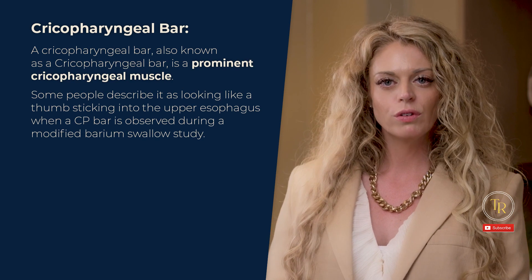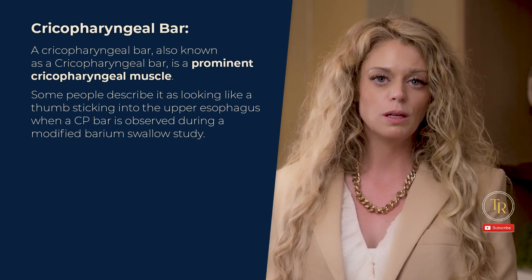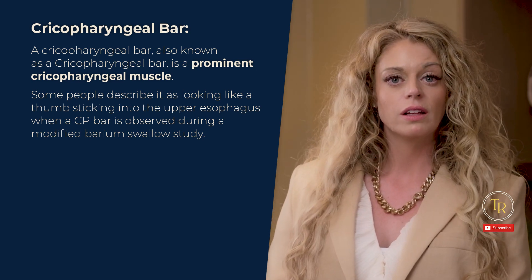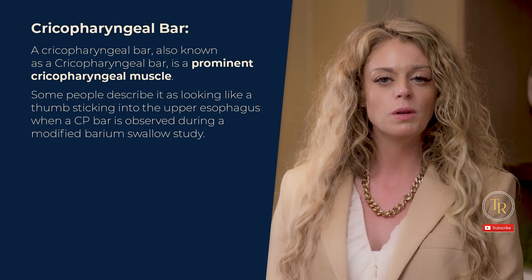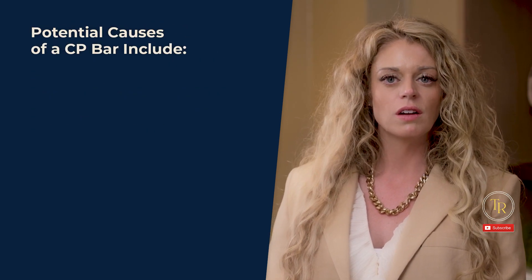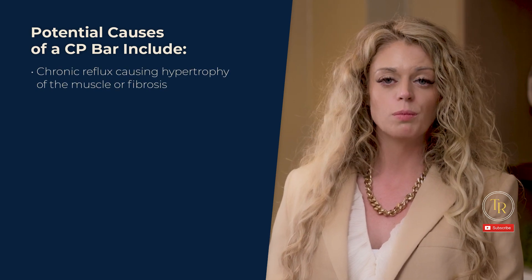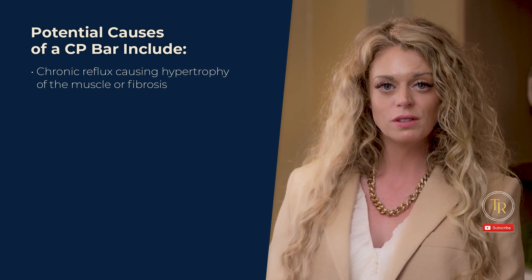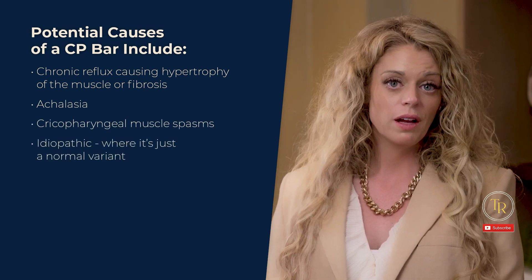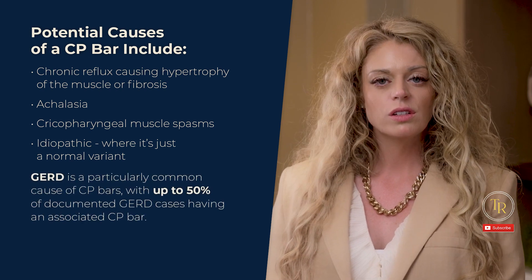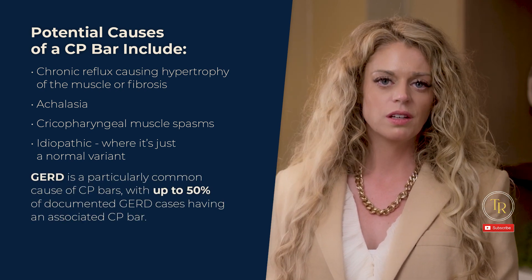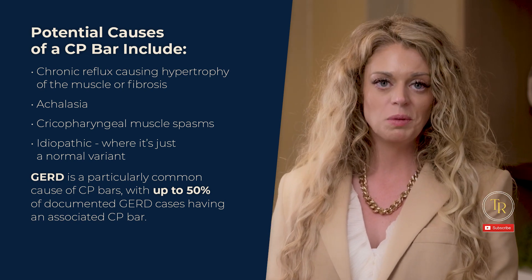A cricopharyngeal bar, also known as a CP bar, is a prominent cricopharyngeal muscle. Some describe it as looking like a thumb sticking into the upper esophagus when observed during video fluoroscopy. Potential causes include chronic reflux causing hypertrophy or fibrosis, achalasia, cricopharyngeal muscle spasms, or it could be idiopathic. GERD is a particularly common cause, with up to 50% of documented GERD cases having an associated CP bar.